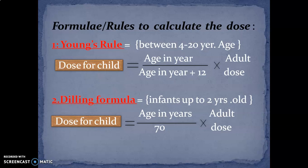Young's formula: the dose of a child is equal to age in years divided by (age in years plus 12), multiplied by the adult dose. Note: you have to take the dose in milligrams. So Young's formula = age in years ÷ (age in years + 12) × adult dose.